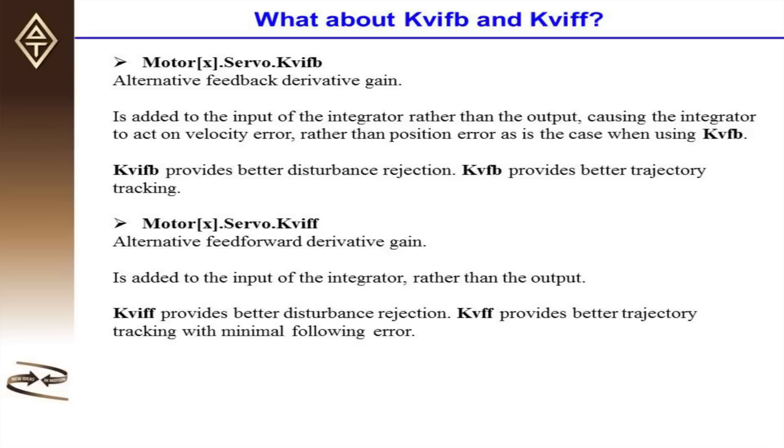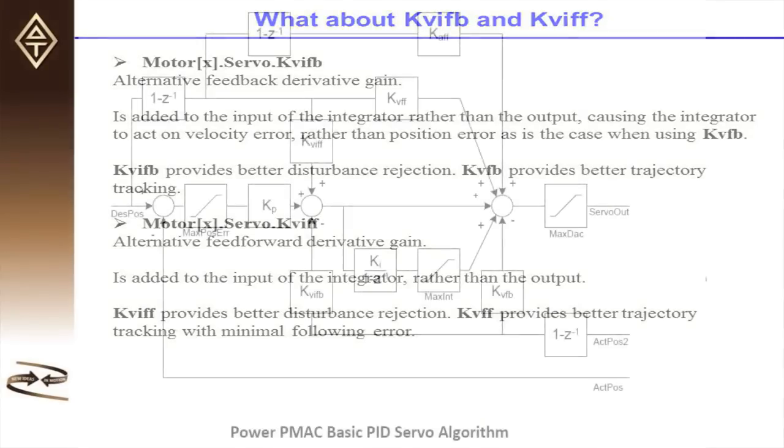There are two alternative derivative gains, MotorX.Servo.KVIFB and MotorX.Servo.KVIFF. The difference between these gains and their aforementioned counterparts, KVFB and KVFF, is where their results get added into the servo loop.